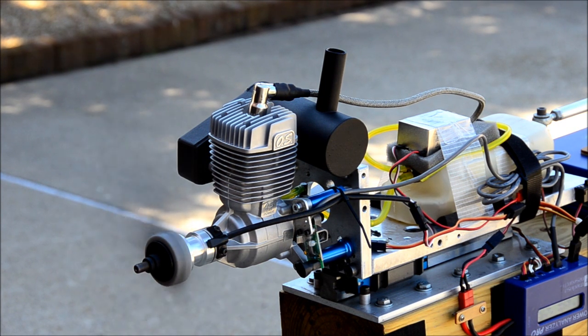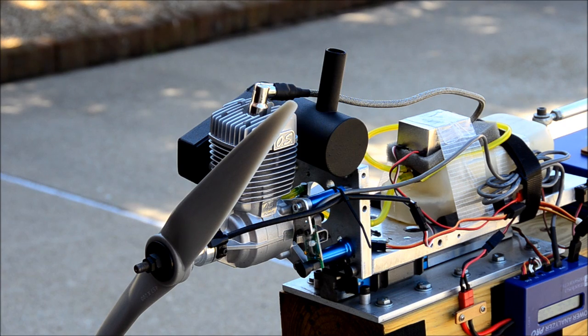With the APC 18x8, it turns 8,875 RPM. It produces 20.2 pounds of thrust.